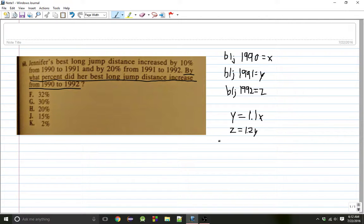So now what we get is this new value, Z equals 1.2 times, and we substitute in 1.1X.